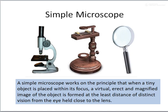Now let us move on and continue with different types of microscopes. The first one is the simple microscope. A simple microscope uses a single type of lens rather than a combination of lenses. It works on the principle that when a tiny object is placed within its focus, a virtual, erect, and magnified image of the object is formed at least at the least distance of distinct vision from the eye held close to the lens. When you use a magnifying lens, you are using only one single lens — that is an example of a simple microscope. So when you use a single lens, it is called a simple microscope.